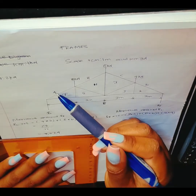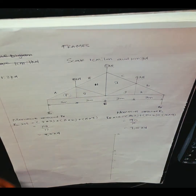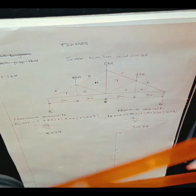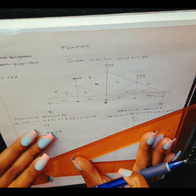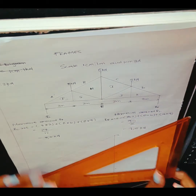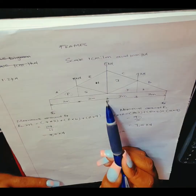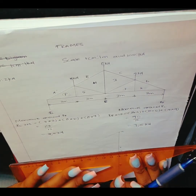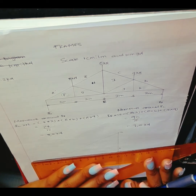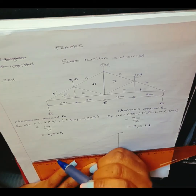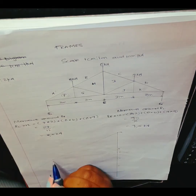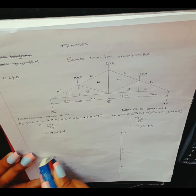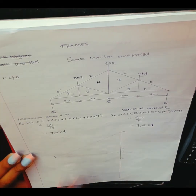Now we want to find point F. From point A, I draw a line at an angle of 30 degrees. Then at point E, I draw a horizontal line. Where the 30-degree line from A intersects the horizontal line from E — that intersection is point F. You can now erase the construction lines you no longer need.